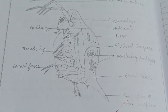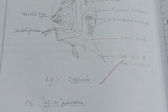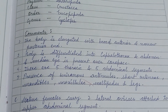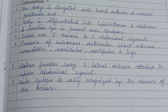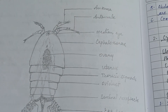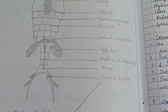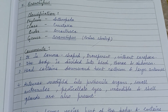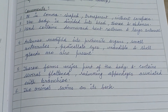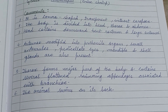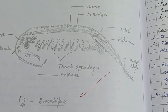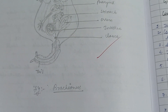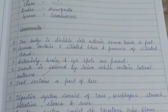It carries 10 marks for each organism, and we have to write two of each — their figure as well as comments and labels. These are microscopic organisms: comma-shaped, transparent, without carapace. The figure looks like this — figure of Branchionus.